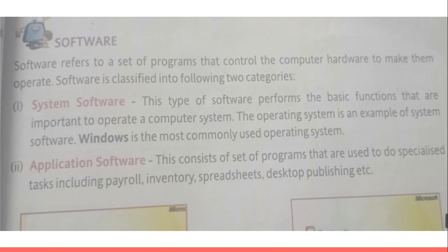Software can be defined as a set of programs that control the computer hardware to make them operate. We can divide software into two categories: system software and application software.